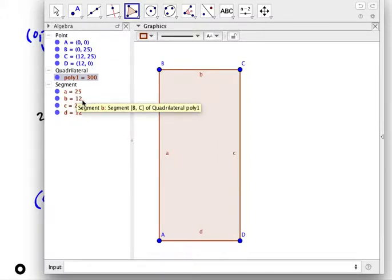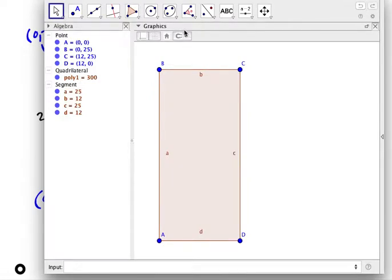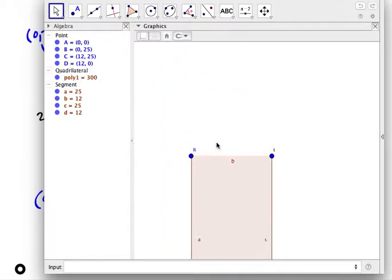And we see GeoGebra's measured all of these. Side A is 25. Side B is 12. Side C is 25. Side D is 12. That's just like our rectangle. And now we want to construct our Steiner point. So I'm going to drag this down. We're going to create our equilateral triangle on top of this edge.